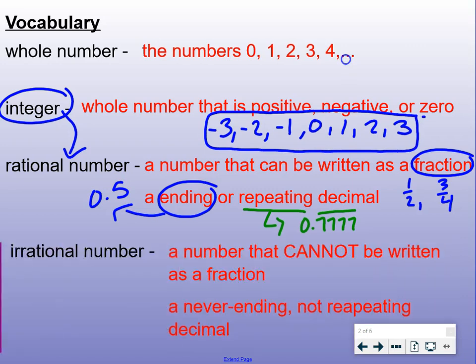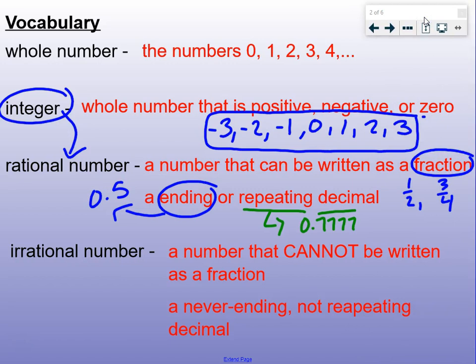Lastly, irrational number: a number that cannot be written as a fraction, a never-ending, non-repeating decimal. A decimal that looks like this, it doesn't repeat and has these dot-dot-dots at the end. That means it's an irrational number. It goes on and on forever.